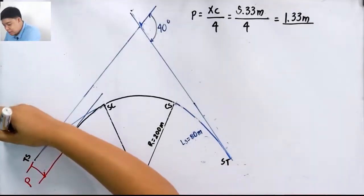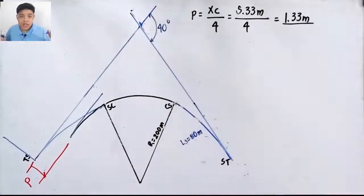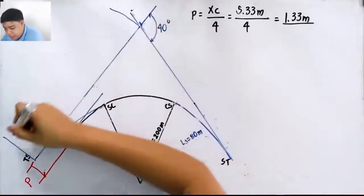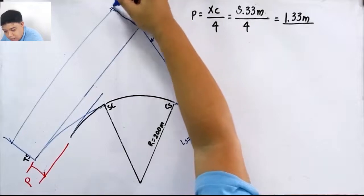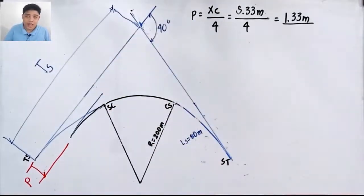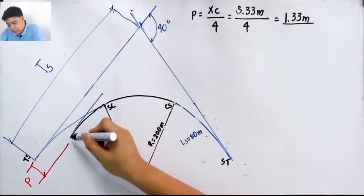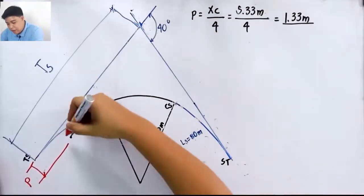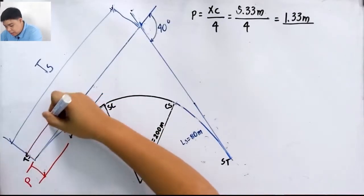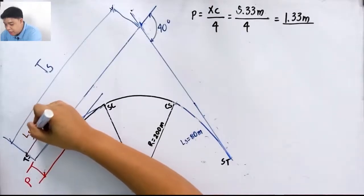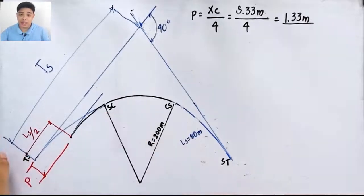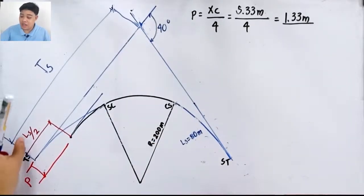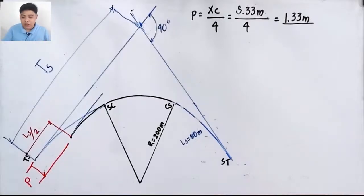The tangent distance Ts is the distance from TS toward the point of intersection of the tangents drawn at TS and ST. An important theorem about the spiral: if you measure the distance from the endpoint of the original circular curve toward TS, this distance is always equal to half the length of the spiral, Ls/2. When solving the tangent distance, you will always use this Ls/2 value.